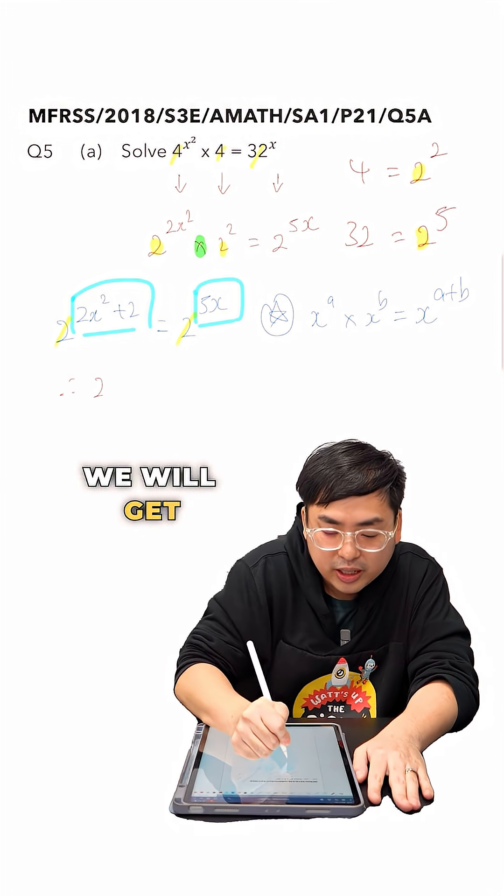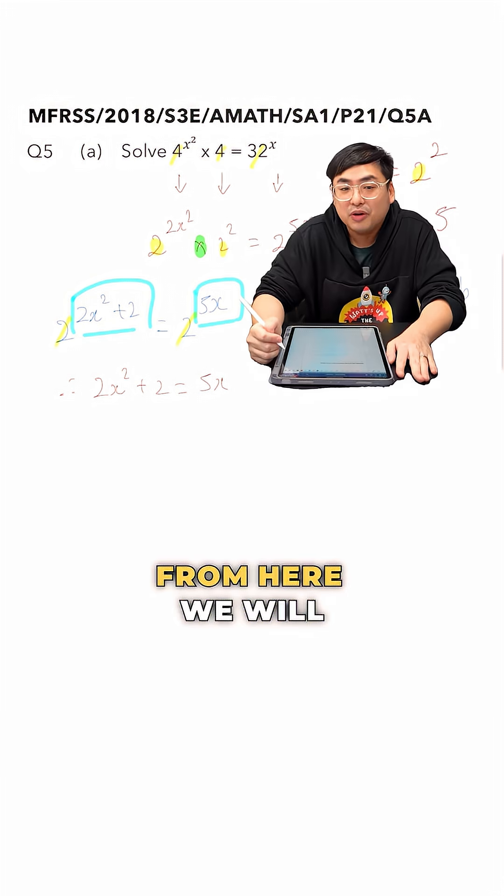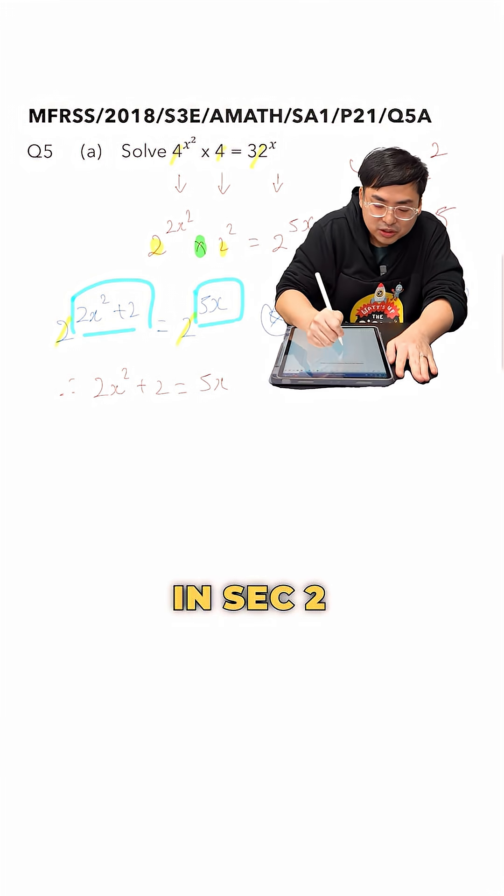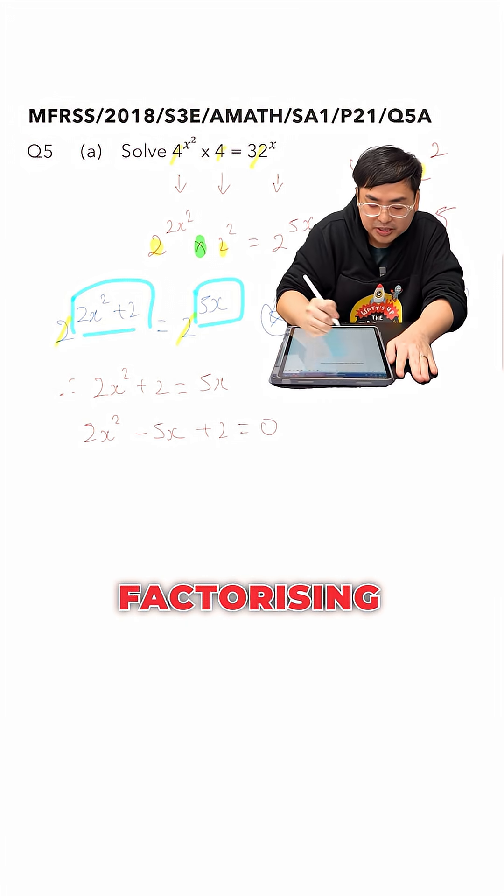So extracting the powers, we will get 2x squared plus 2 equals to 5x. A very pretty quadratic equation. From here, we will implement what we've learned in sec 2 to solve the quadratic by shifting over 5x first, and employing our method of factorizing.